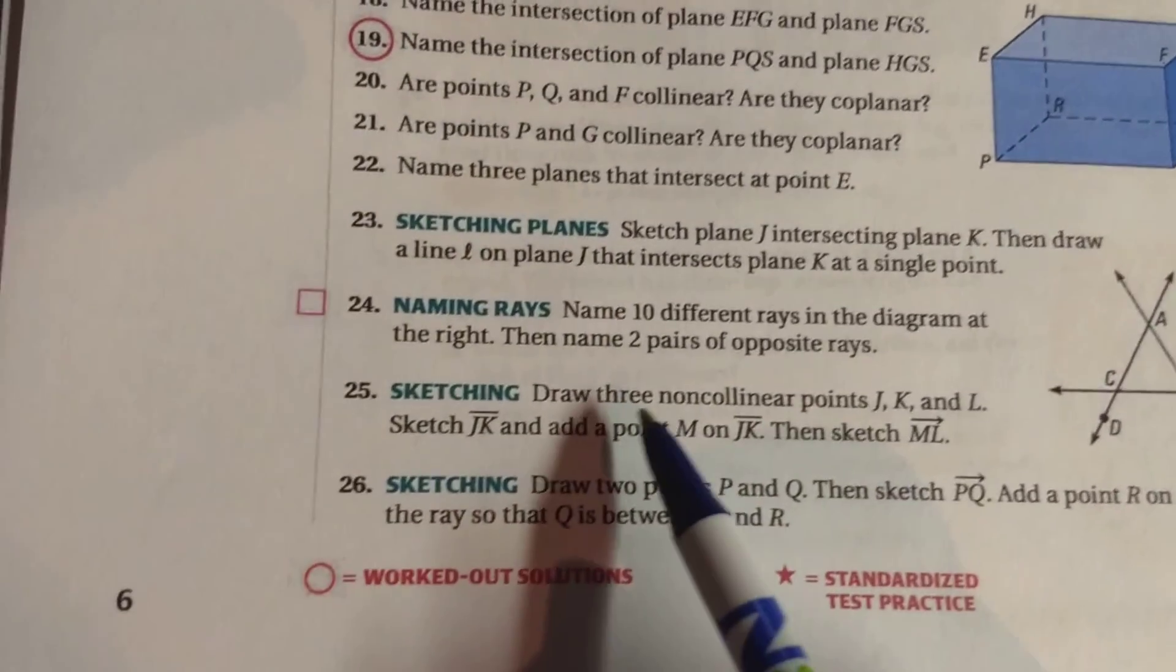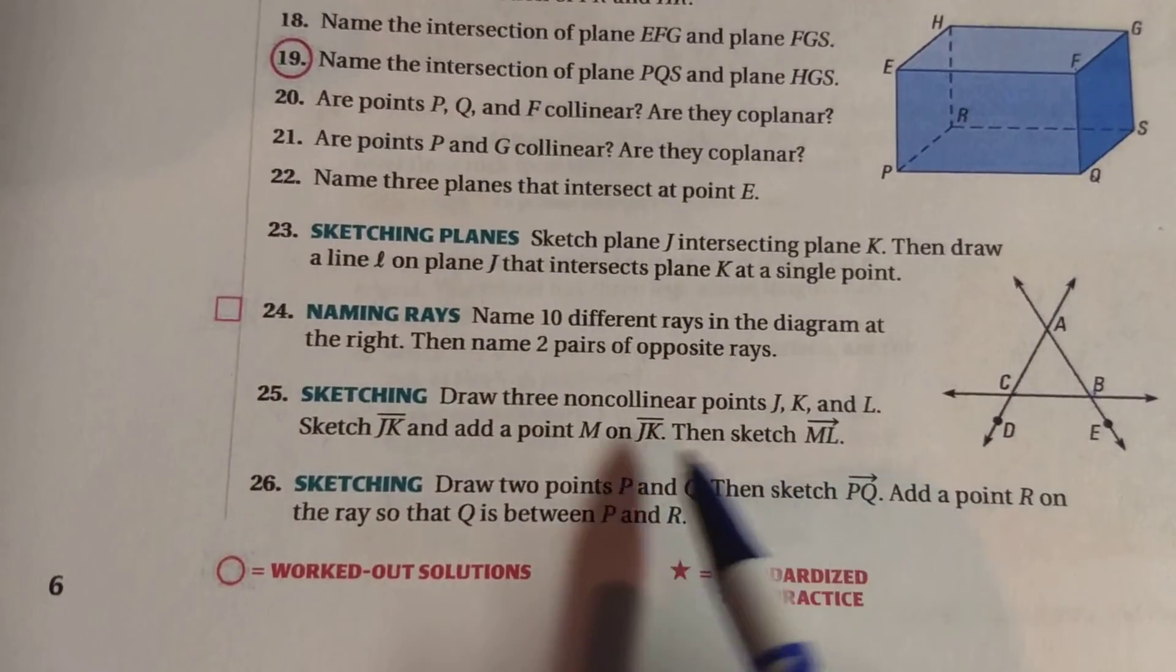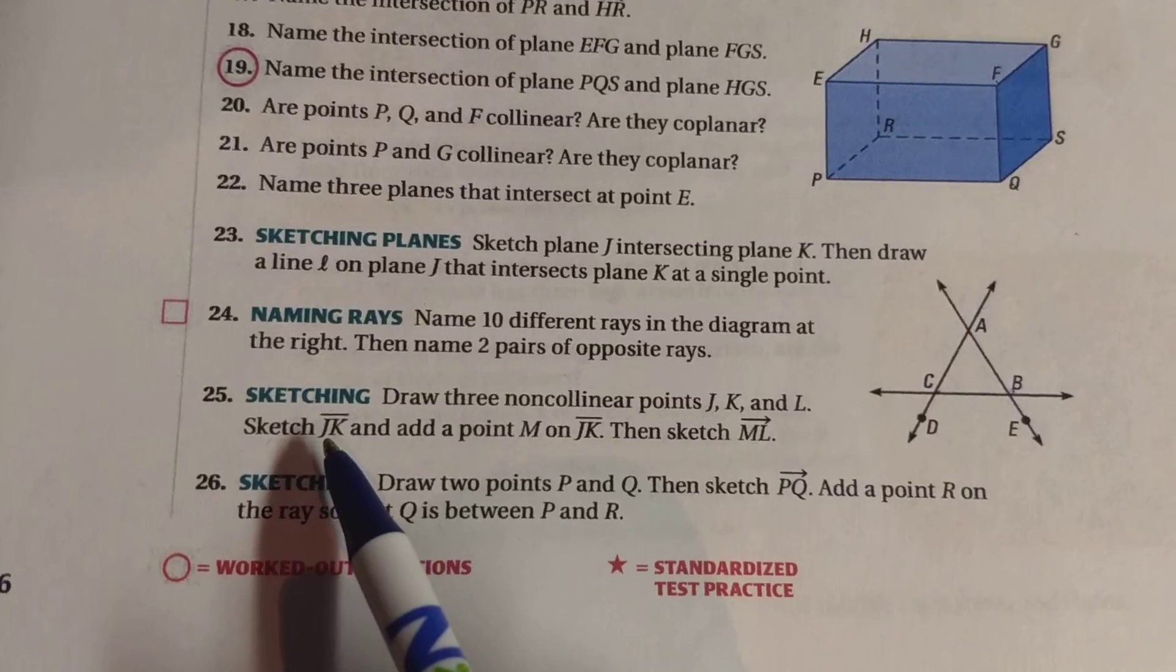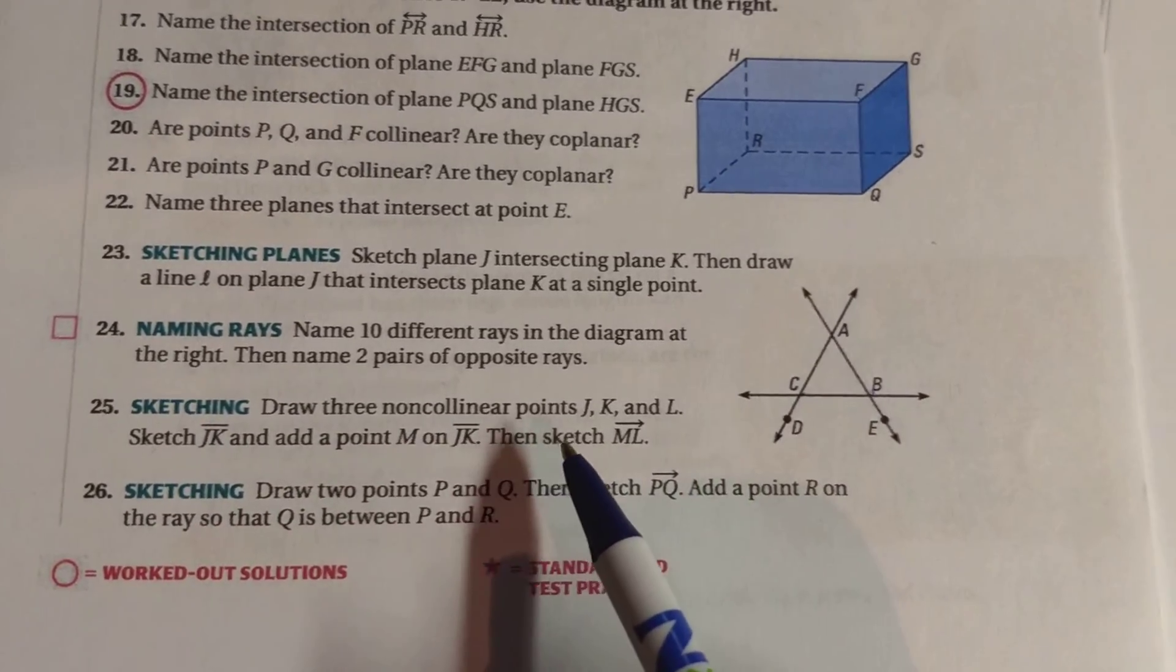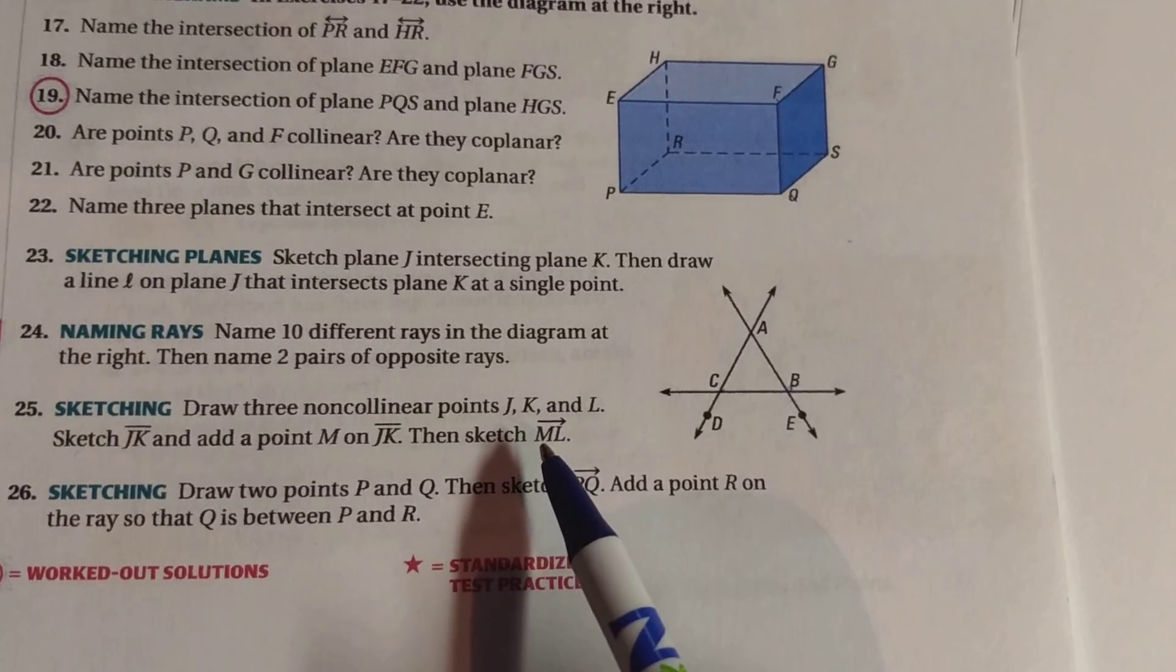Just double-checking that we did everything. We drew the three non-collinear points. We sketched line segment JK and added a point M on it. And then we started at point M and made a ray going through point L.